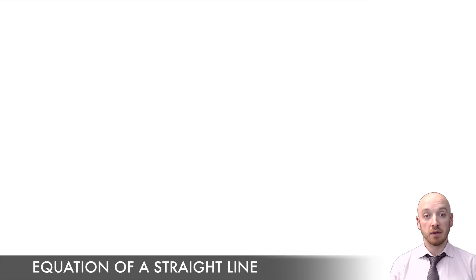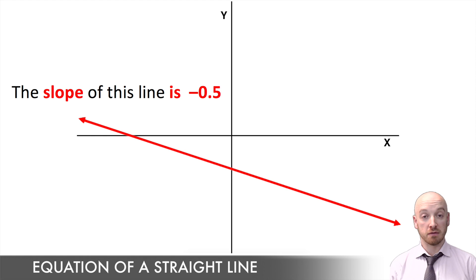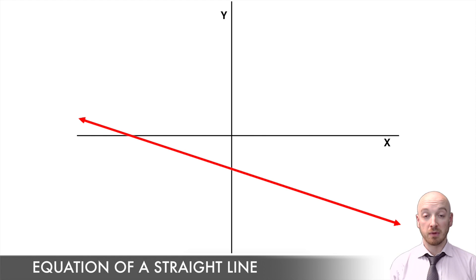Now in the last video, we learned how to calculate the slope or the rate of change of a straight line. And the only other characteristic that we need to be able to define a straight line is something called the initial value, and we're gonna call it the y-intercept. And the term y-intercept is a bit of a giveaway here. What we're talking about is the point where a straight line crosses over that y-axis.